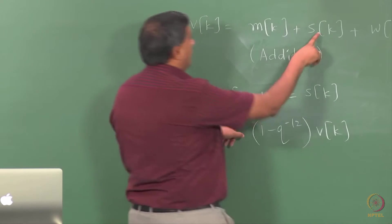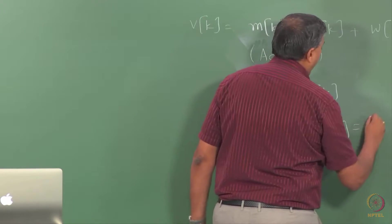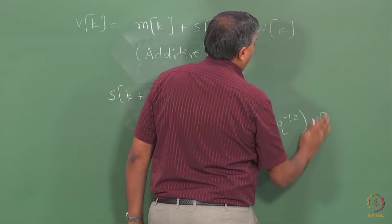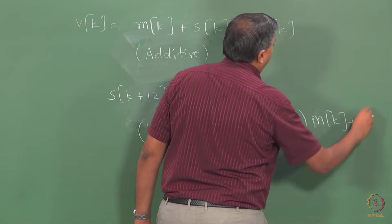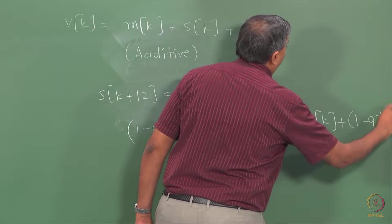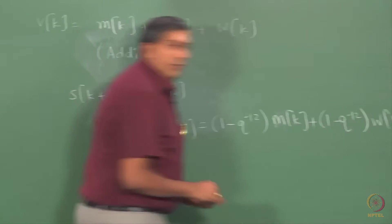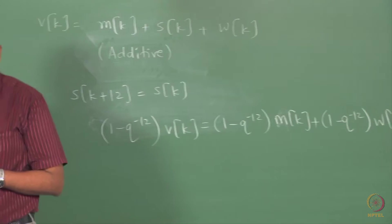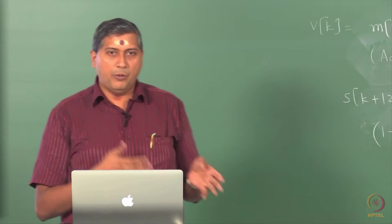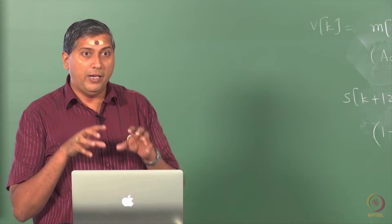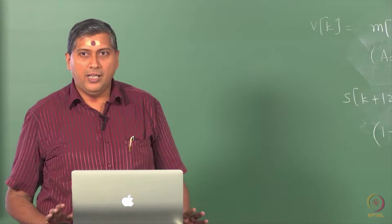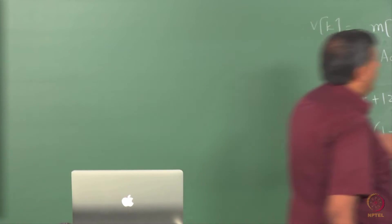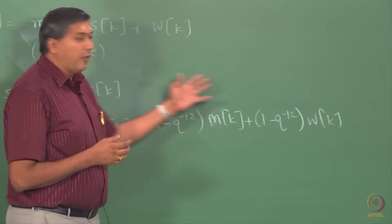If this holds, this is correct for the seasonality, then I would have (1 minus Q to the minus 12) M_K plus again (1 minus Q to the minus 12) W_K. But this is not a great way of doing things because as we have seen yesterday, whether you use this approach to handle trend or seasonality, you will be introducing artificial zeros on the unit circle in the stationary part whatever you will be left with, and here also we are modifying the trend.